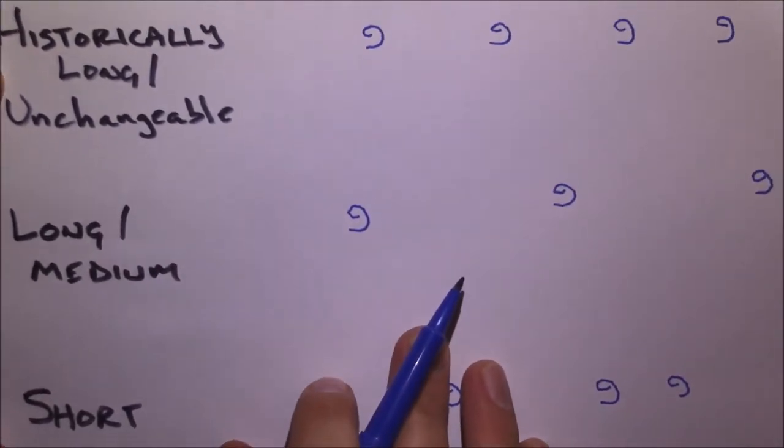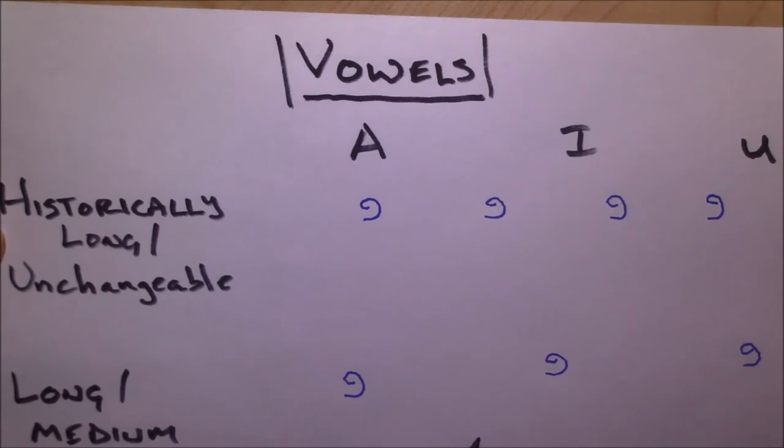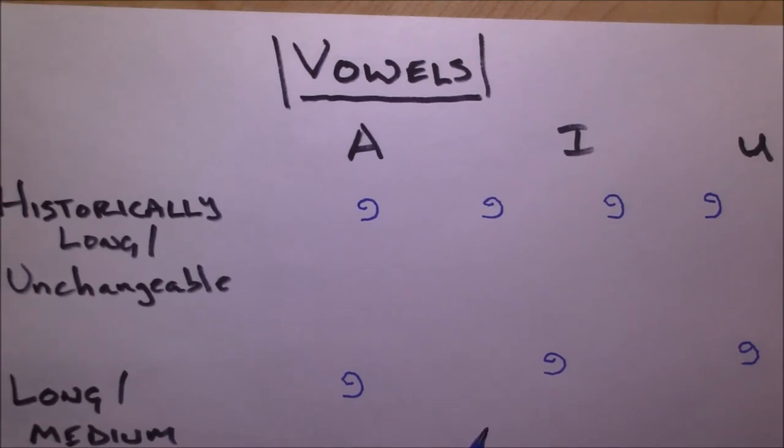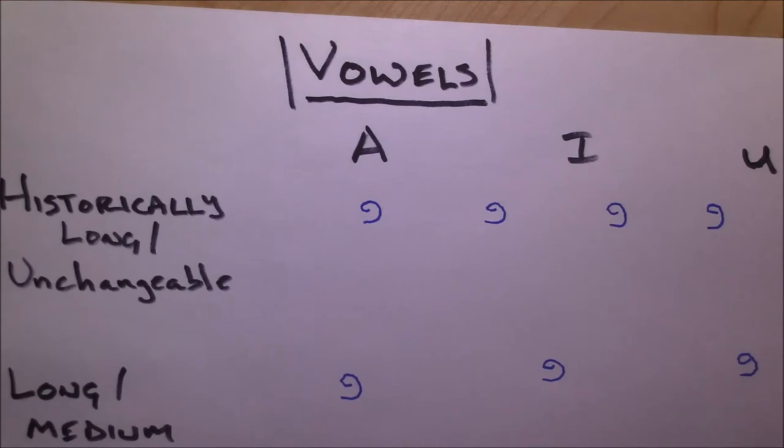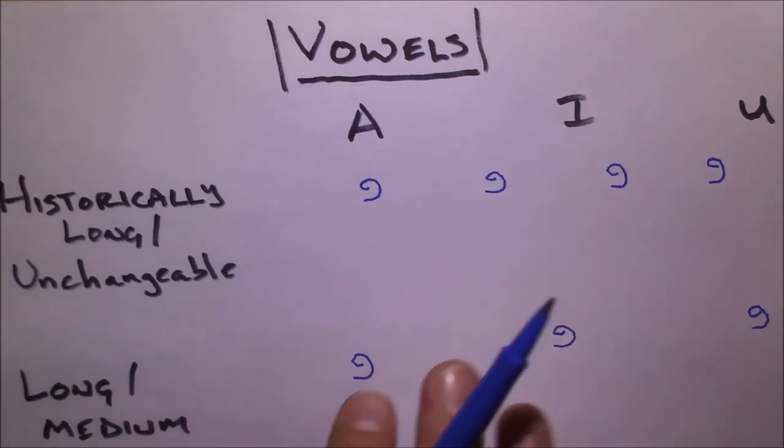These are sort of the length values of the vowels themselves. Some vowels are longer than others. We have that in English as well. The thing about the historically long or unchangeable vowels is that they are all connected to consonants that act as vowel carriers that lose their consonantal status but still are in the original text. And so these are unchangeable.